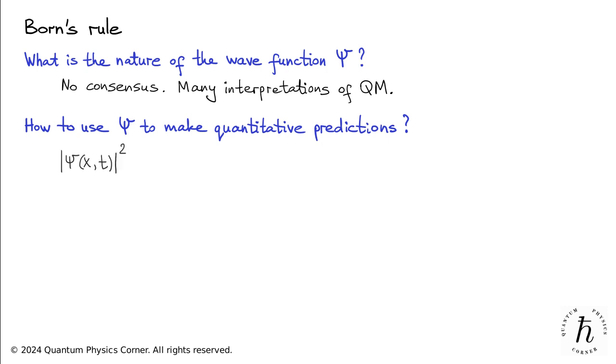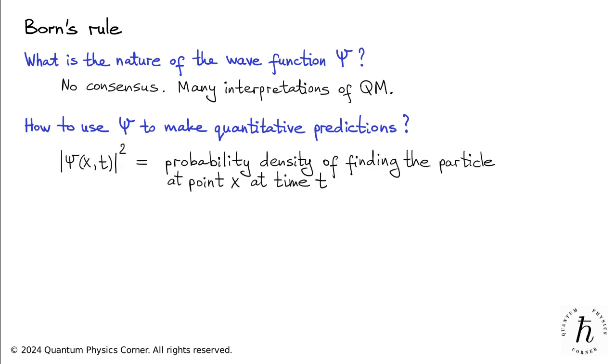The Born rule stipulates that the squared modulus of the wave function equals the probability density of finding the particle at point x at time t.